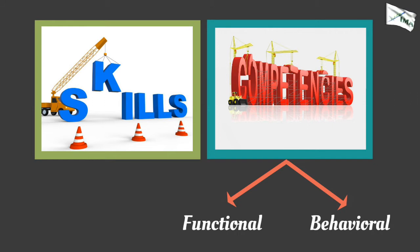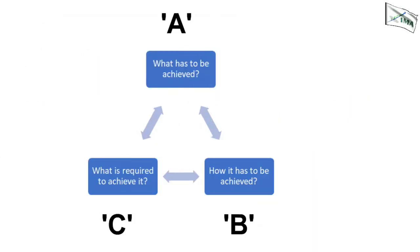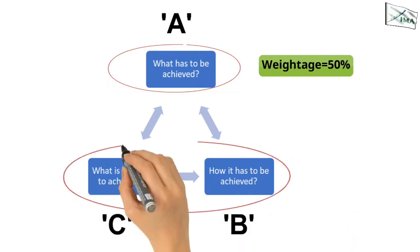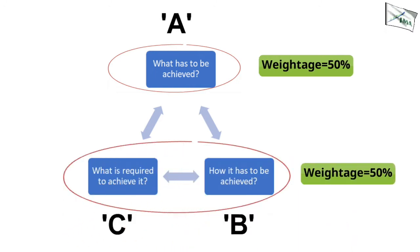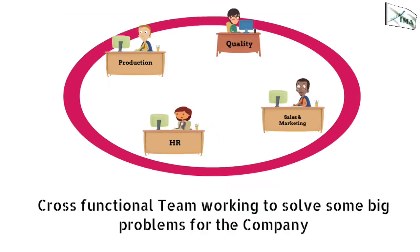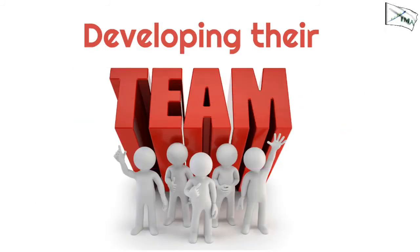Usually the performance appraisal system would give weightage to all the above. Normally the weightage for section A may be 50% and other two sections together will have balanced 50% weightage. Some companies may introduce more elements in the performance appraisal system as follows: cross-functional team working to solve some big problems for the company, and developing their team.